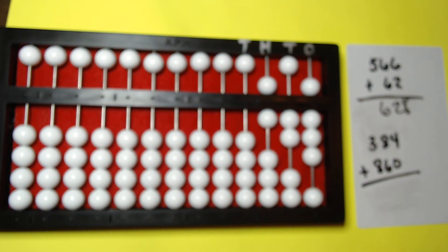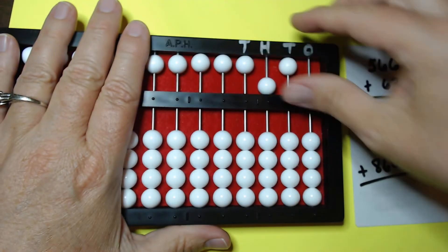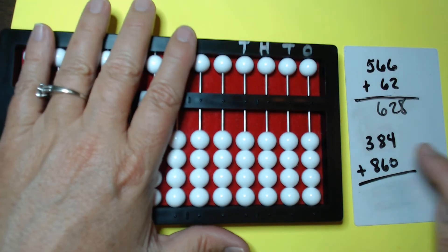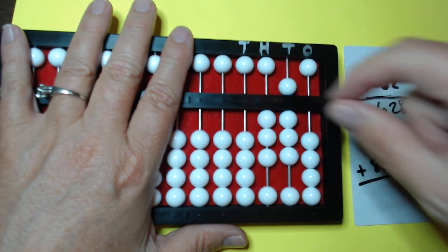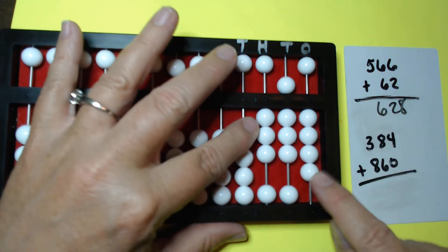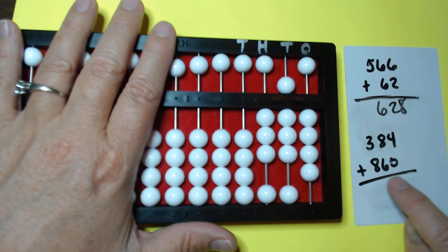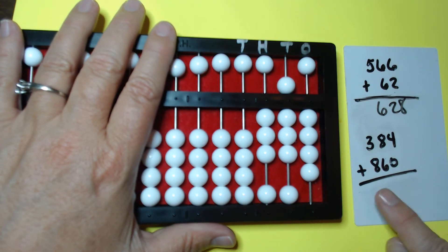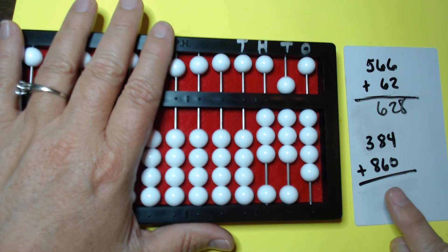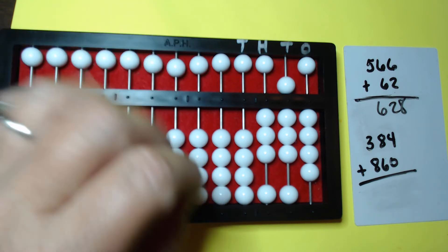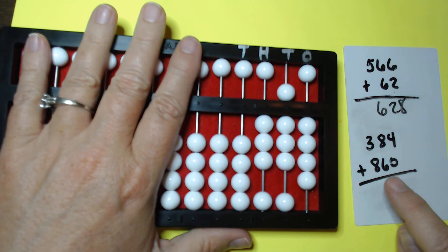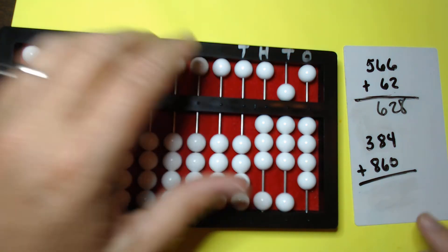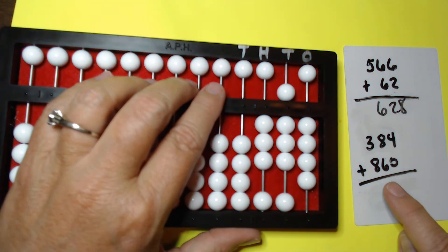All right. So let's clear first. Always clear in between your problems. Now we're going to do 384. We're going to set that on our Abacus. 384. We're going to add 860. I worked this problem already so follow along. There's several exchanges that we're going to make. I'm trying to do it slow but at the same time not too slow because then I lose my place. So let's give it a shot.